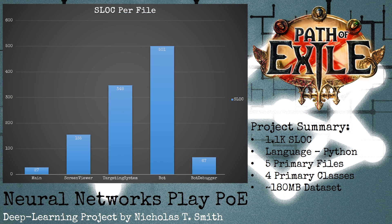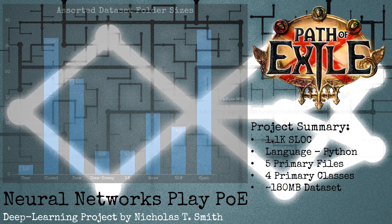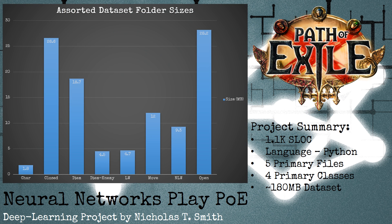The project consists of roughly 1,100 source lines of Python code, primarily contained in five files. The dataset used to train the neural networks is around 180 megabytes.